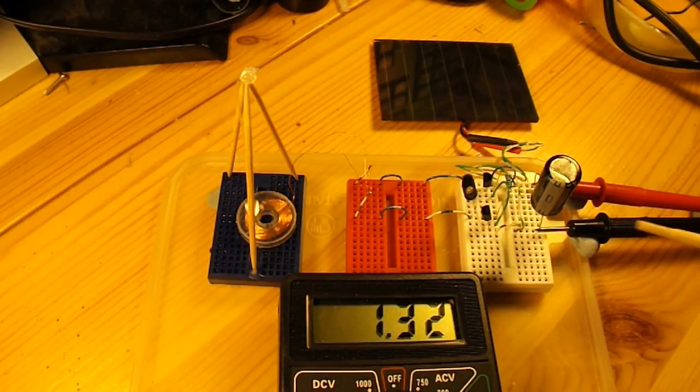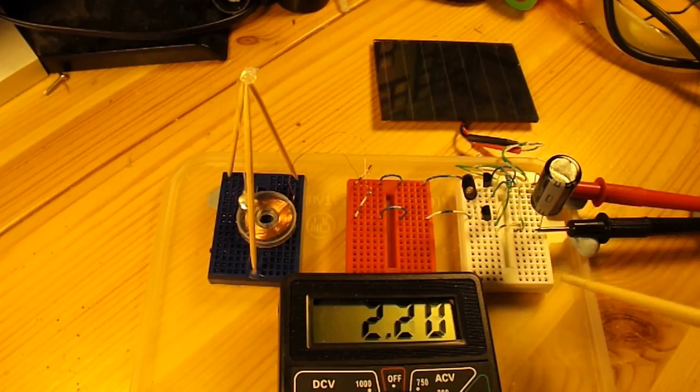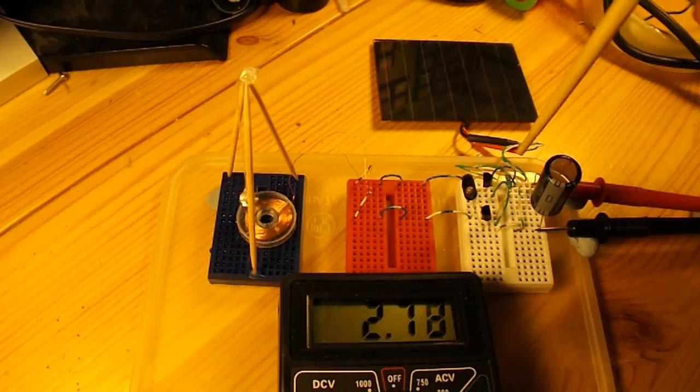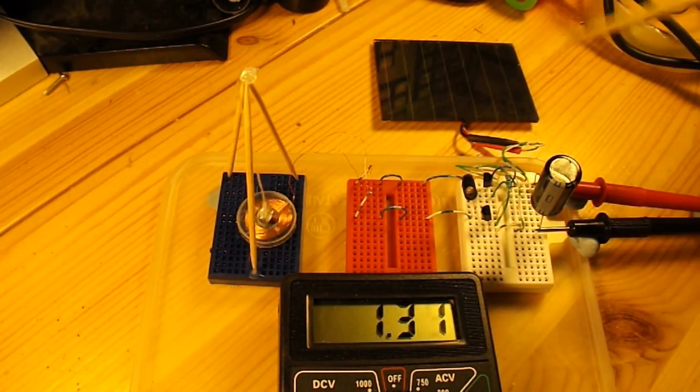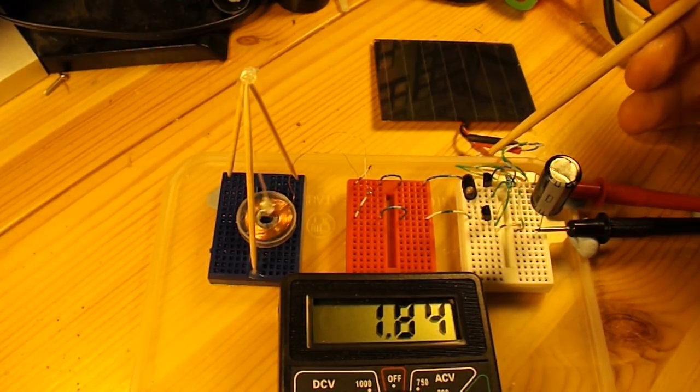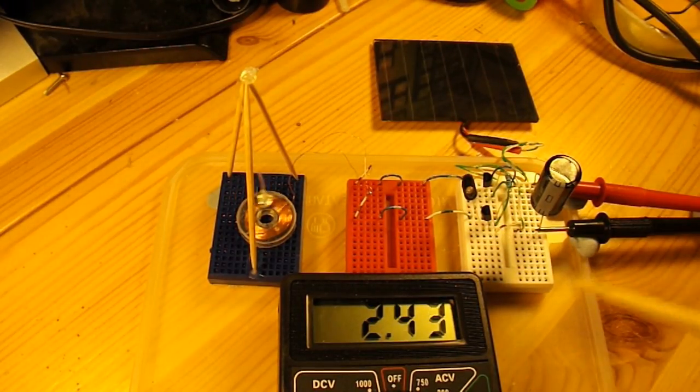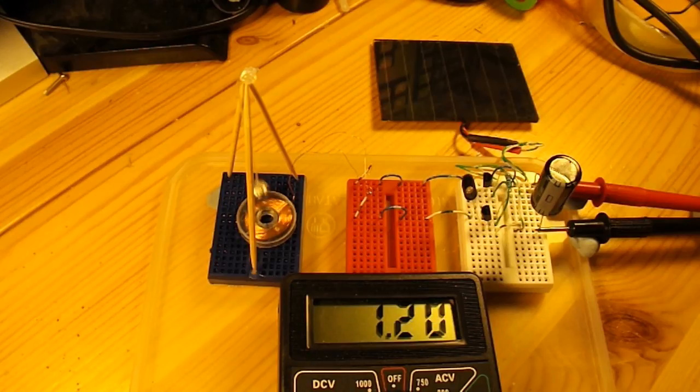I'll just run through the components. That's a 4700 microfarads capacitor. Flashing LED. The resistor is 2.2k. That transistor is a 2N3906. And that one is a 2N3904. And as I say, I'll link to the circuit in the video description anyway so you can find it.